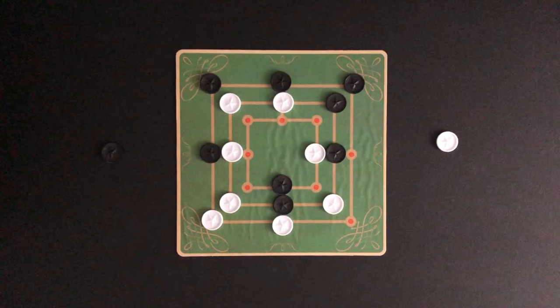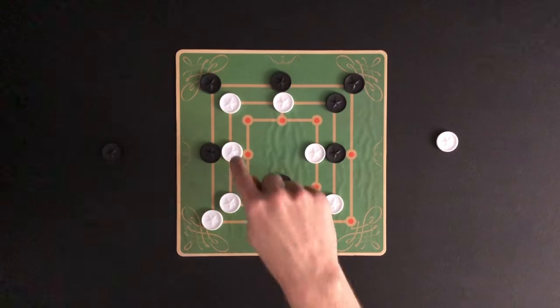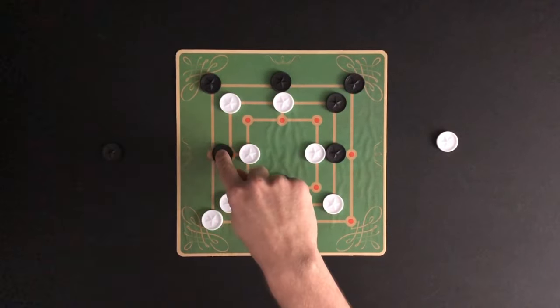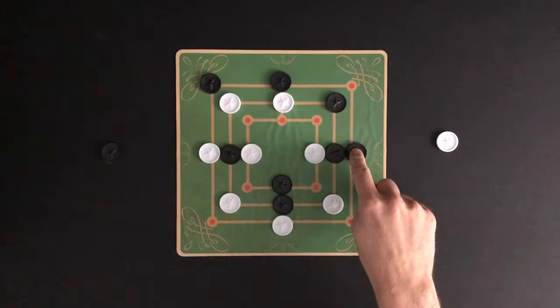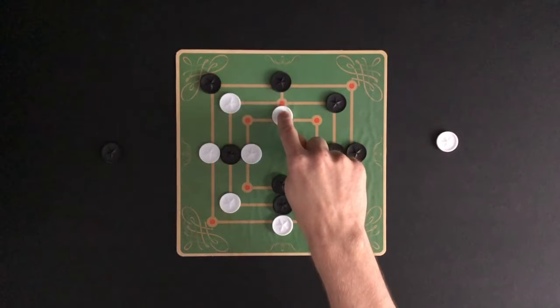Once all the markers have been placed, players will take turns moving one of their markers. A marker can move to one adjacent space. White starts by moving one of their markers. Play moves to black to make a move. Again, players are trying to get three in a row. Play continues until one player is able to get three in a row.